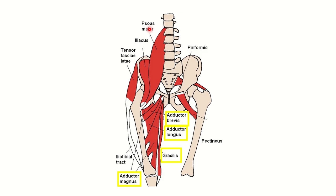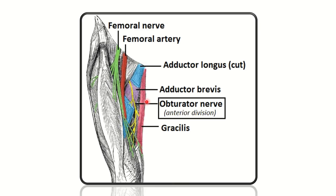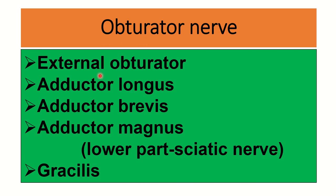Since the stabbing was in the groin, along with the adductor longus muscle, other structures will also be injured. We can see the adductor longus muscle going down, the adductor brevis muscle, and the gracilis muscle. In the upper part we can see the femoral nerve and femoral artery which lie in the femoral triangle. Below the adductor longus there is a nerve going down — this is the obturator nerve — which is very close to the adductor longus muscle and it supplies the adductor longus muscle.